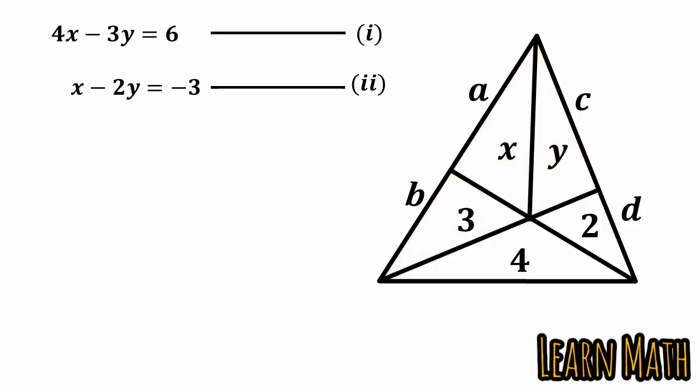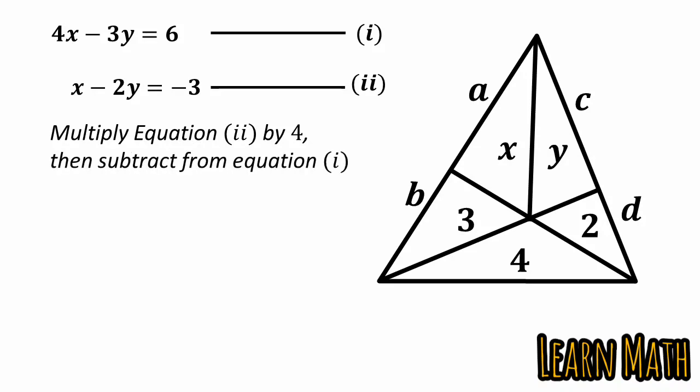We can easily solve these two equations and find x and y. Multiply the second equation by 4 and then subtract from equation 1. So we will get y is equal to 18 by 5. Put this y equals 18 by 5 in equation 2 and we will get x is equal to 21 by 5.